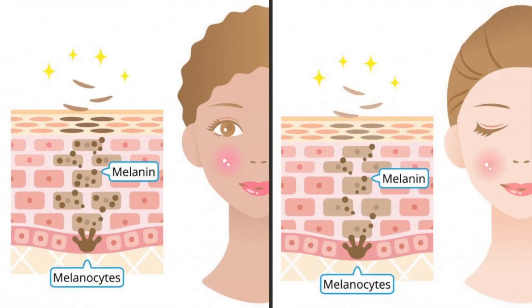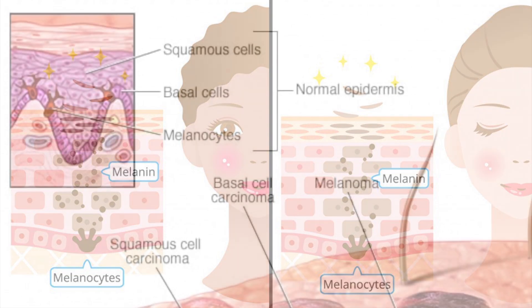Melanocytes are cells that make melanin, the brown pigment that gives skin its color and protects your skin against some of the sun's damaging UV rays. Skin cancer that begins in the melanocytes is called melanoma.